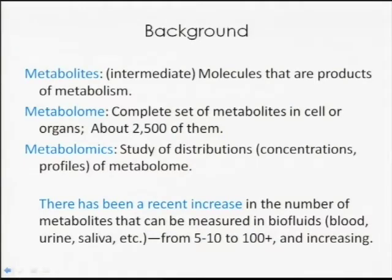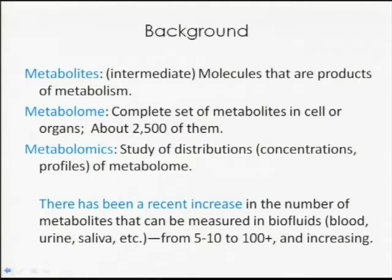So what is metabolomics? Metabolites are the molecules that are the products of your metabolism. Biochemists characterize metabolism as lipid metabolism, carbohydrate metabolism, energy metabolism, and so on. These metabolites are the molecules involved in these metabolic reactions. Metabolome refers to the complete set of metabolites in a cell or in organs. Currently, people classify about 2,500 metabolites, though it's not commonly agreed upon — some count more, some count less.